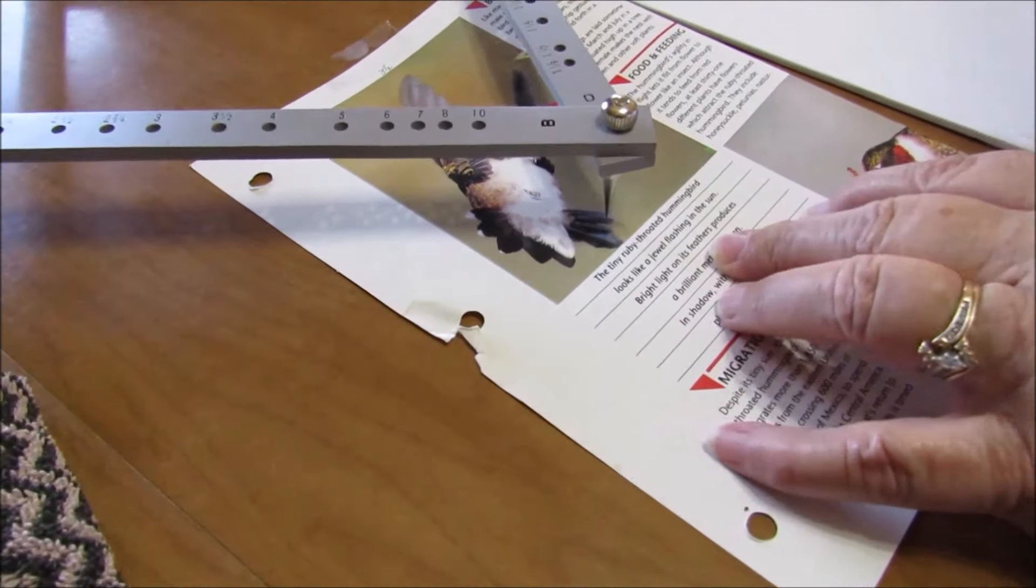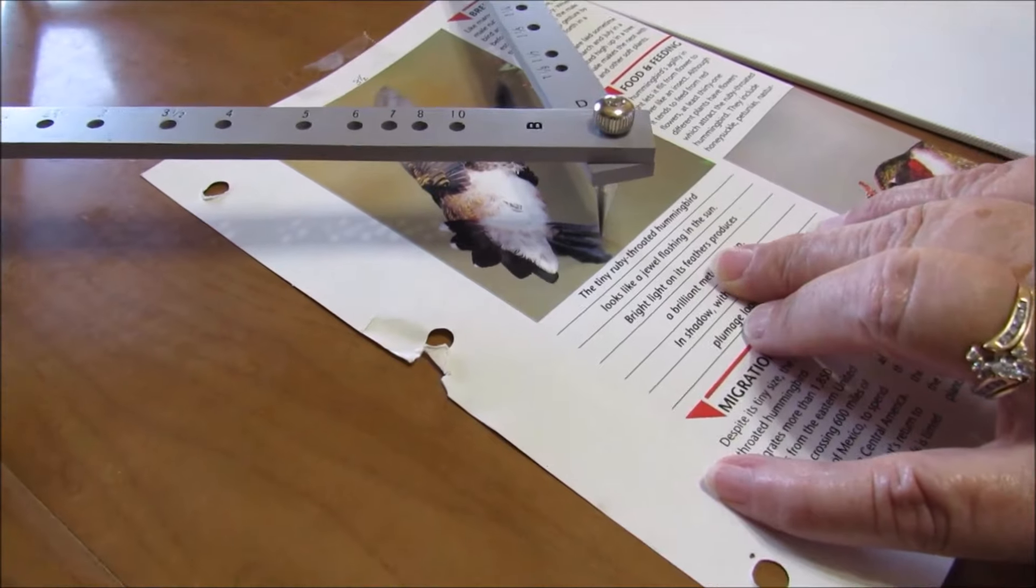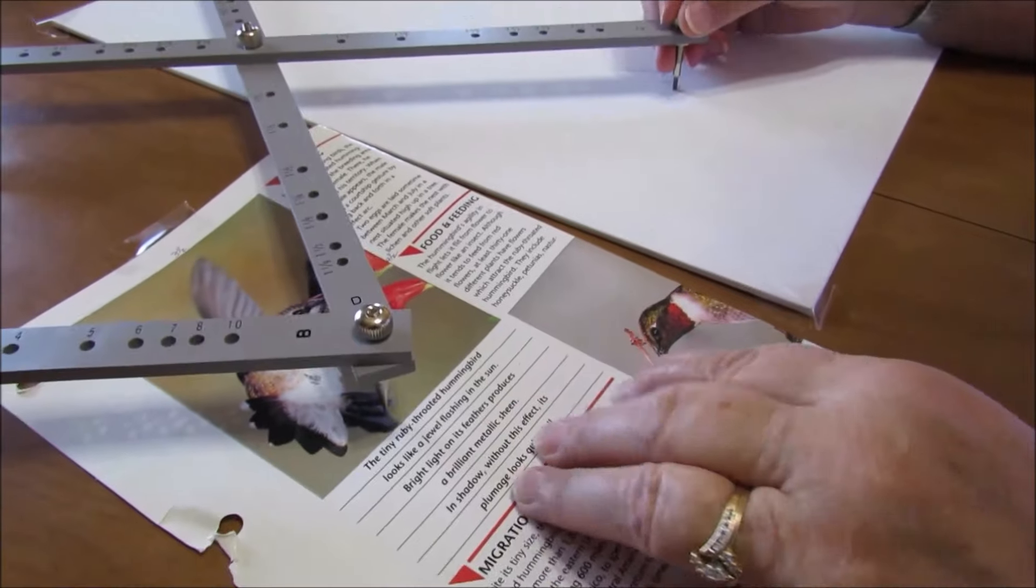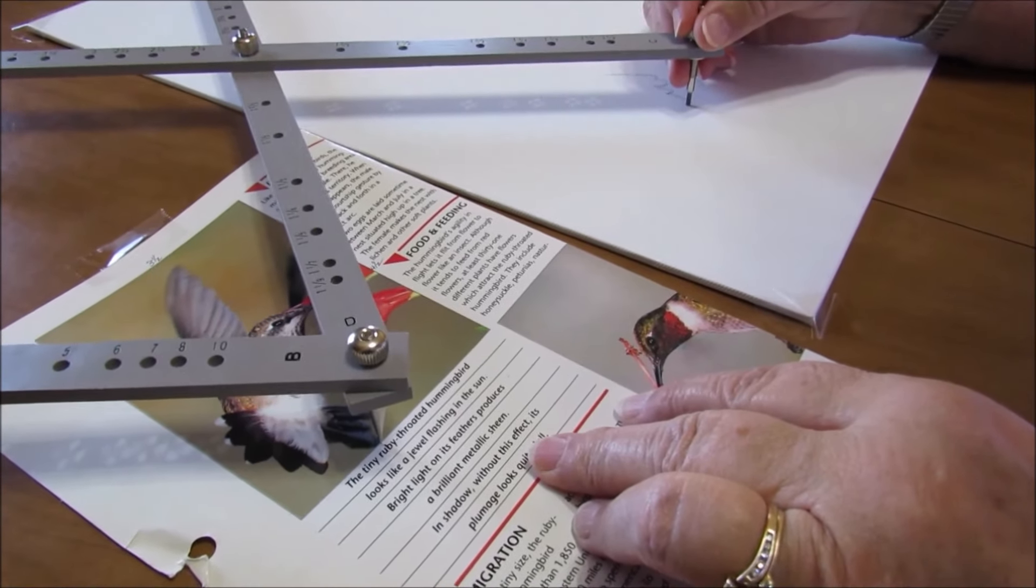Put the stylus on the edge of the photograph and start tracing around, making a pattern on the art board.